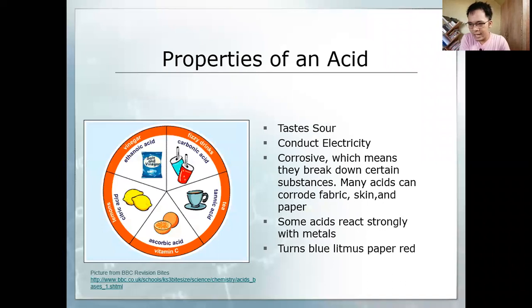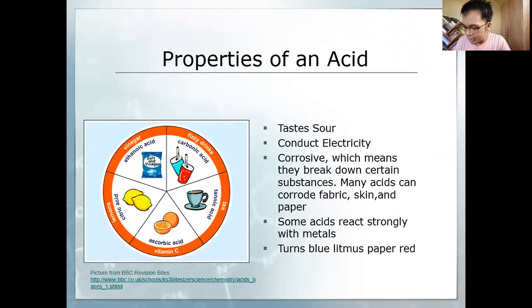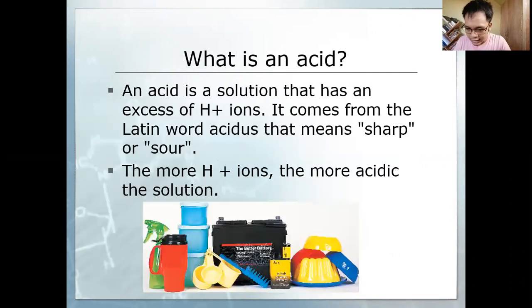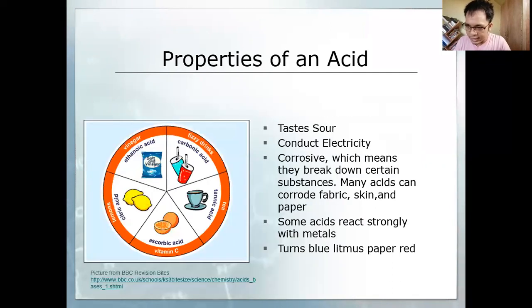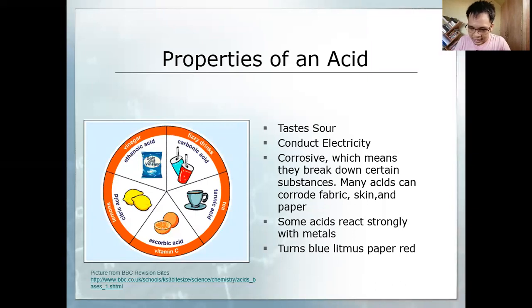The properties of an acid: it's sour, it conducts electricity, and it is corrosive, which can break down substances. It reacts strongly with metals to give off a gas byproduct and turns blue litmus paper into red, since it is an acid.